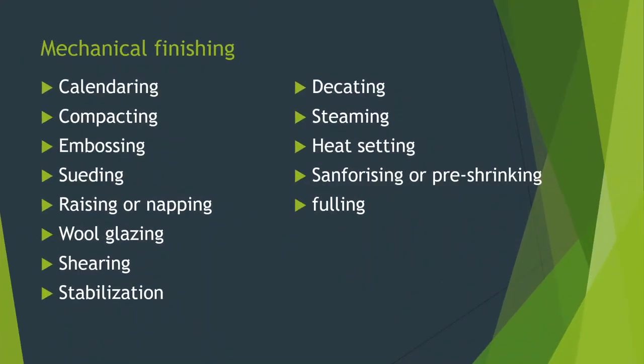Some examples of mechanical finishing are calendaring, raising, and sanforizing. Other mechanical finishes applied to fabric include calendaring, compacting, embossing, sueding, erasing or napping, wool glazing, shearing, stabilization, decatizing, steaming, heat setting, and sanforizing or pre-shrinking. These are the major mechanical finishing processes carried out on fabric based on the requirement.